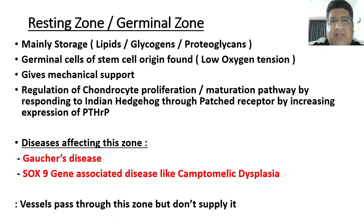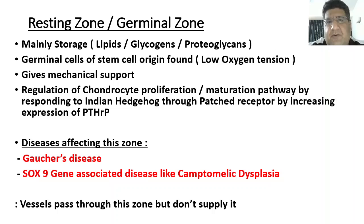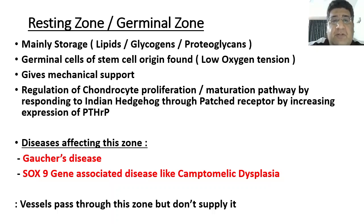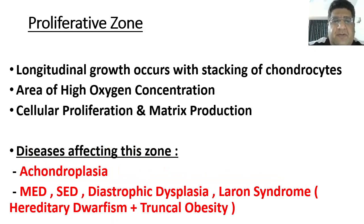The resting zone is a very multidimensional zone — it does a lot of multitasking: storage, germinal stem cells, mechanical support, and it also provides a framework for the actual proliferation that starts in the next zone. Two sets of diseases affect this layer: Gaucher's disease, and SOX9 gene-associated diseases like campomelic dysplasia. Regarding blood supply, vessels do pass through this zone but they don't supply it.